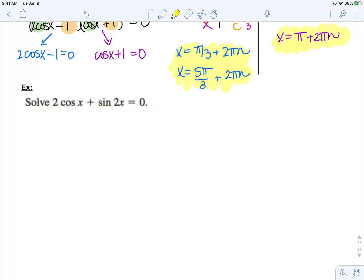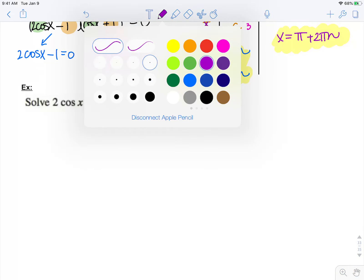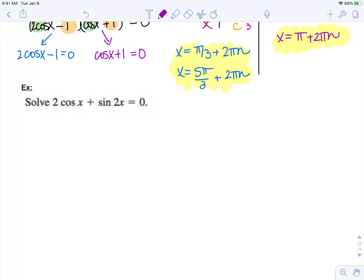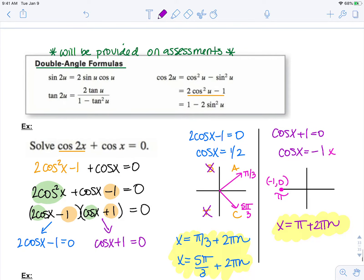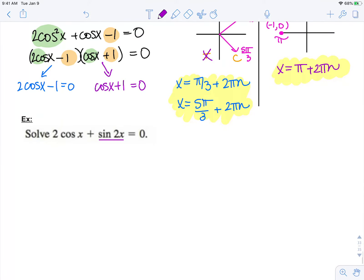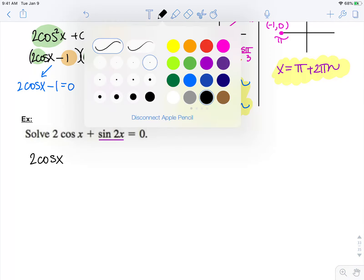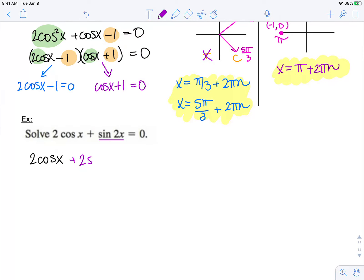Solve 2 cosine x plus sine 2x equals 0. So I need to get this in terms of one function, sine 2x. And now if I look up here, the only trig identity I have for sine 2x is here. So that's the only one I can use. So I have 2 cosine x plus 2 sine x cosine x.